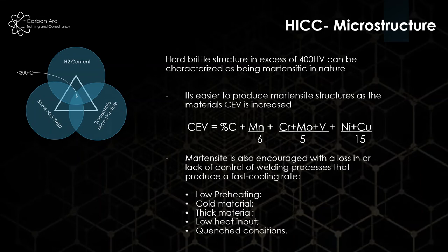We can drive martensitic structures by losing control in our welding processes or not putting controls in place. If we have low preheats—we start with a cold material—or we have thick material, low heat inputs, and quenched conditions in steels, these will all drive fast cooling rates. Fast cooling rate equals martensitic structure. A high CEV with a cooling rate that's not long enough will drive a martensitic structure, and that's very susceptible because it's brittle.